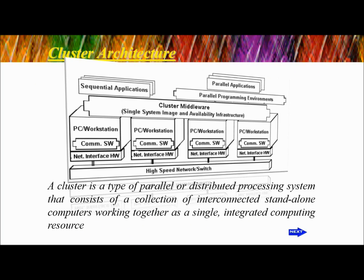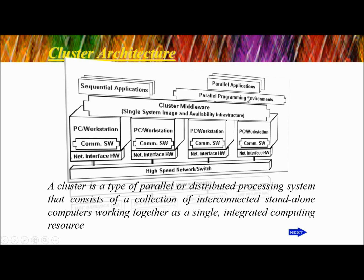The architecture of a cluster: a cluster is a type of parallel or distributed processing system that consists of a collection of interconnected stand-alone computers working together as a single integrated programming resource. The cluster middleware includes PC workstations, commercial software, and networking interfaces. There are also high-speed network switches, parallel applications, parallel programming environments, and sequential applications.